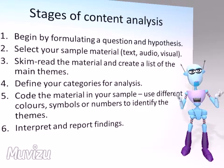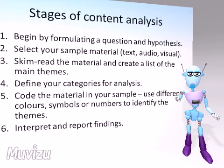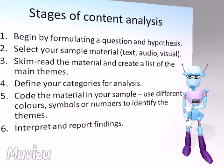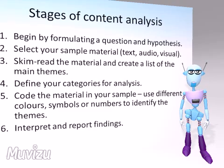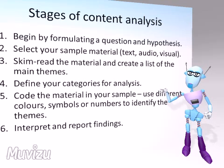Make sure that your categories are fully operationalised and that they're really clear to anyone else who might be coding. The next step is to code the material in your sample, and to help with this you can use different colours or symbols or numbers to identify the themes or the different sources. And then lastly, you can start to interpret your analysis and report your findings.